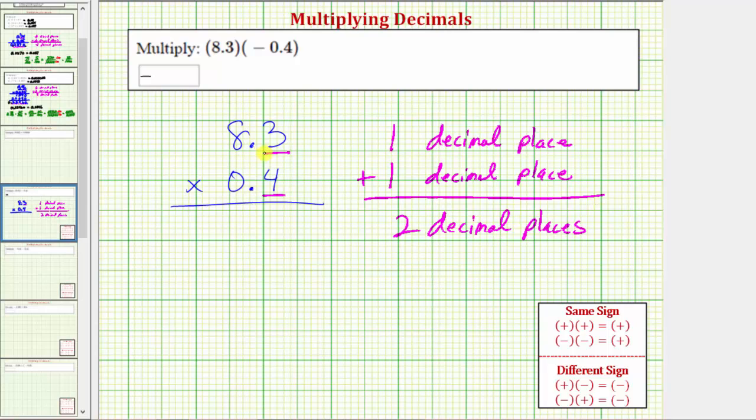Next, we'll multiply as if we had whole numbers rather than decimals. So we'll find the product of 83 and four. So four times three is equal to 12. Perform an exchange with the one. Four times eight is equal to 32 plus one is 33. So 83 times four is equal to 332.